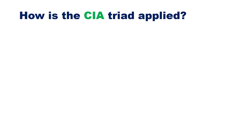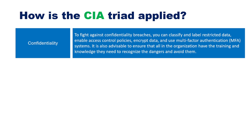So how is the CIA Triad applied? To fight confidentiality breaches, you must classify and label your sensitive data, and thereafter establish access controls on corporate data — and in most cases use multi-factor authentication systems. For shared data on SharePoint or shared folders, you only allow the people who need access, and you can implement systems that force the user to use a password and MFA to gain access to data. This is how you protect the confidentiality of the data.